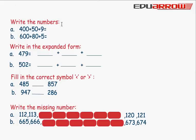Write the numbers: 400 plus 50 plus 9 equals 459. 600 plus 80 plus 5 equals 685.